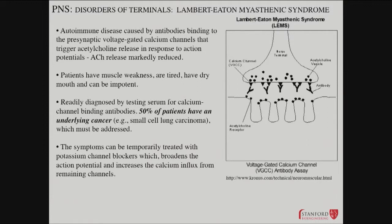In Lambert-Eaton, you tend to have more diffuse muscle weakness. Patients complain of fatigue, malaise, dry mouth, and autonomic dysfunction like impotence, as well as impaired voluntary muscle control. You test this by looking in the serum for antibodies against voltage-gated calcium channels.